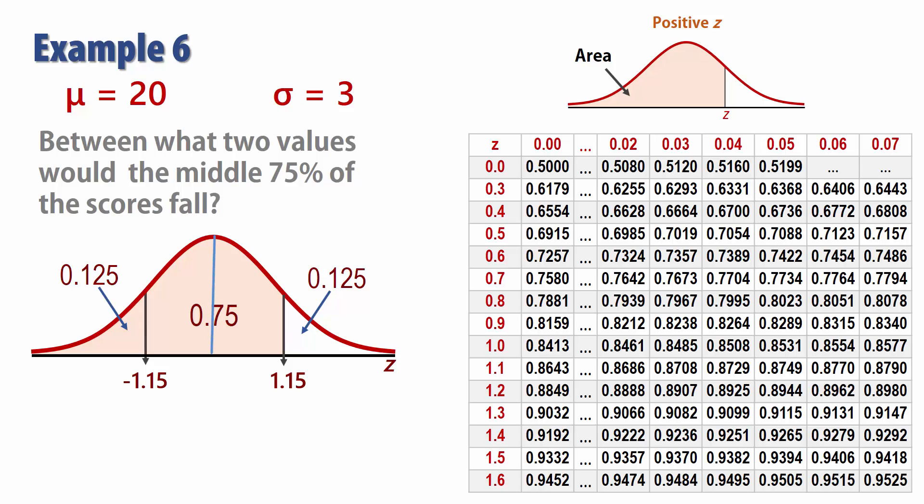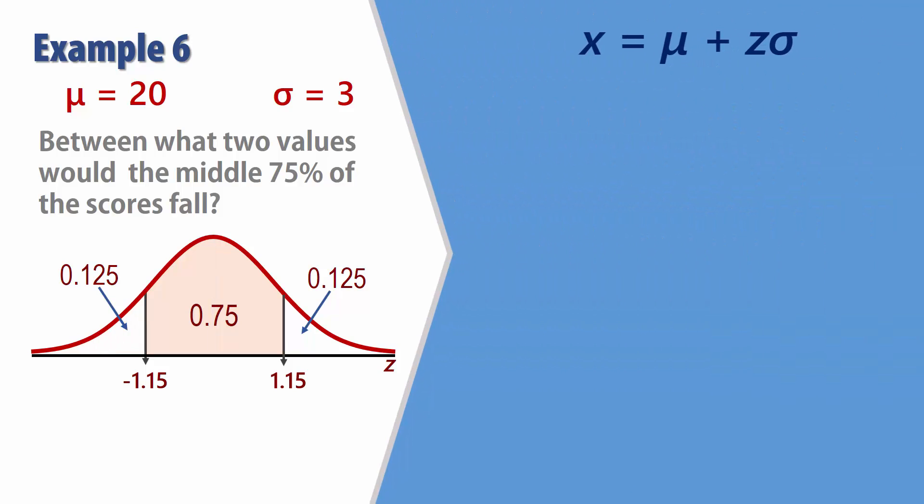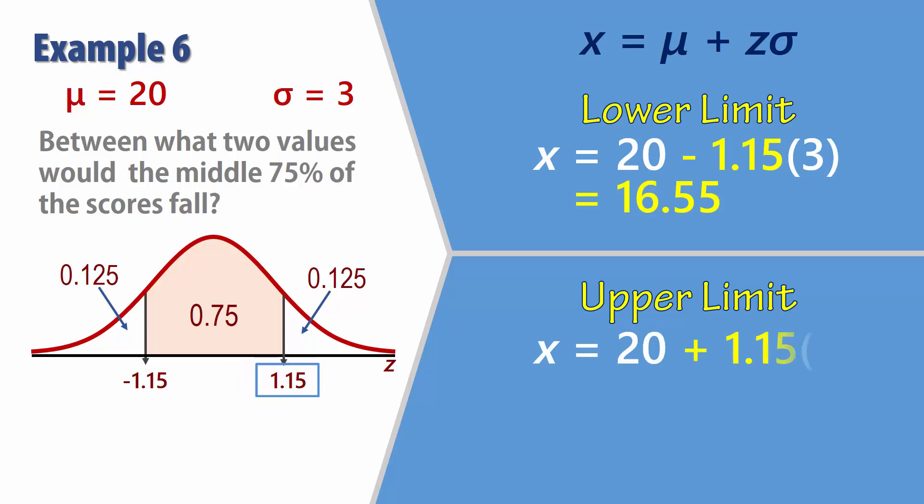That is, we don't even need to look up the positive Z score. Symmetry should tell us that it will be positive 1.15. Let's now calculate the actual scores. For the lower limit, substituting negative 1.15 gives 16.55. And for the upper limit with positive 1.15, we have 23.45.